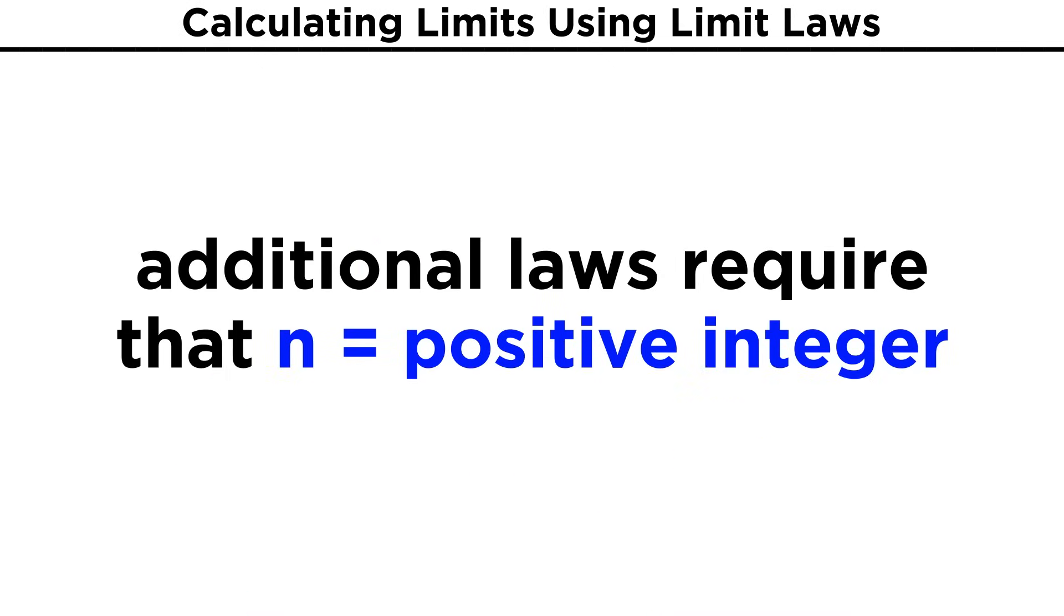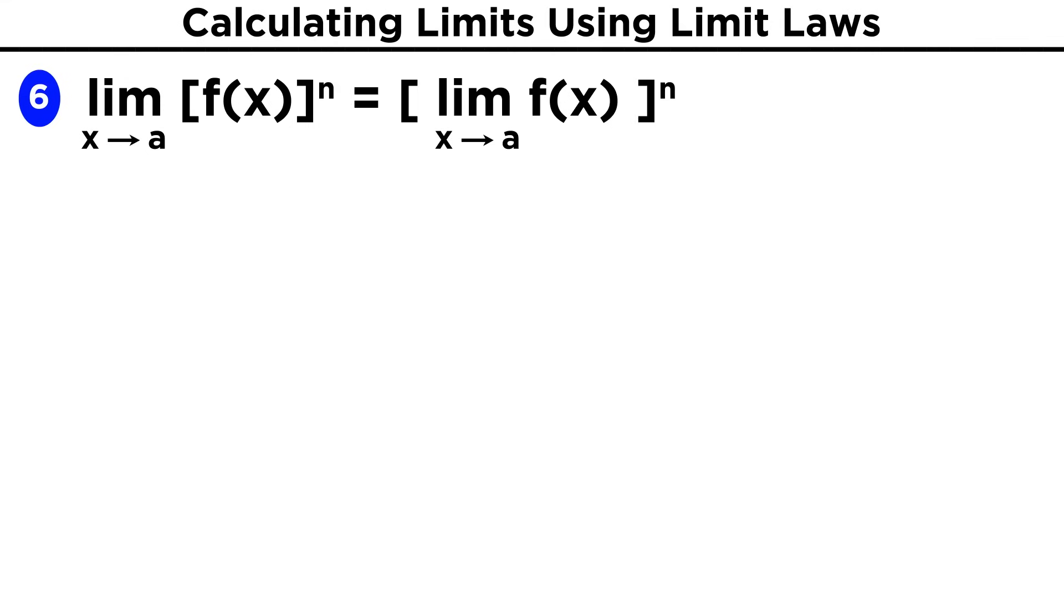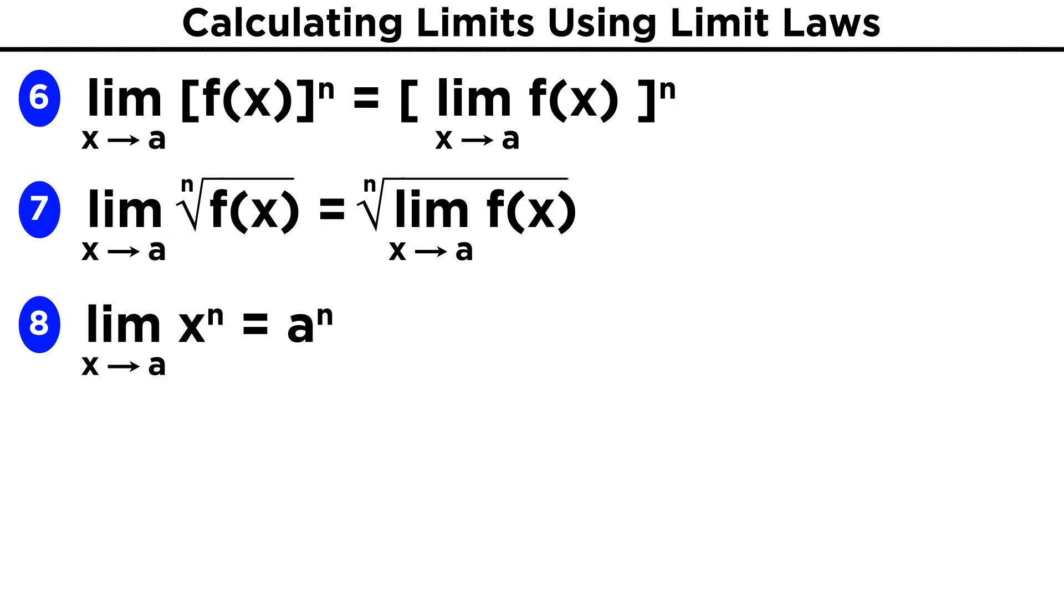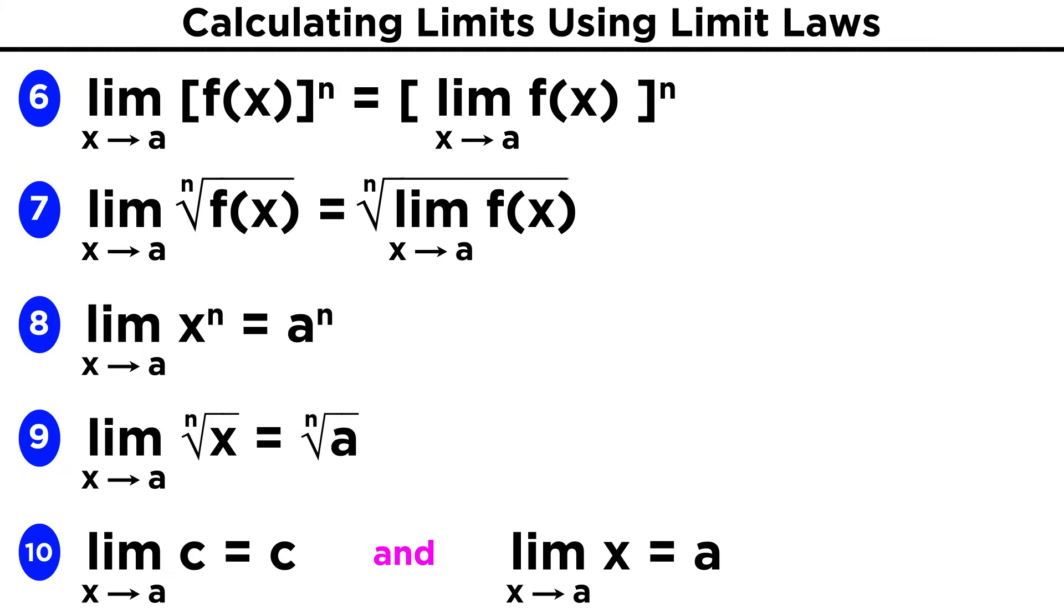To these laws we can add just a couple more, all of which require that n be a positive integer. The limit of a function raised to some power, n, is equal to the limit raised to that power. Similarly, the limit of some nth root of a function is equal to that root of the limit. The limit of x to the n as x approaches a is a to the n, and the limit of the nth root of x as x approaches a is the nth root of a. And the last two laws we will mention. The limit of a constant is equal to that constant regardless of the parameters of the limit. And the limit of x as x approaches a particular value is that value.